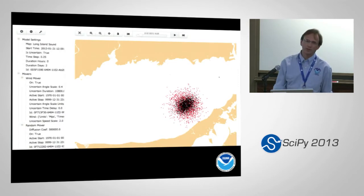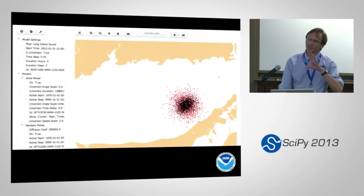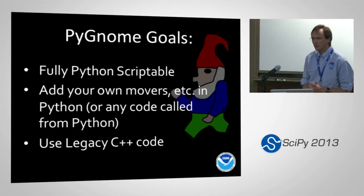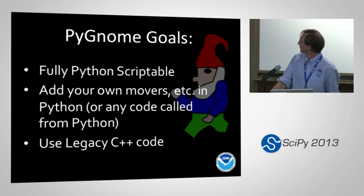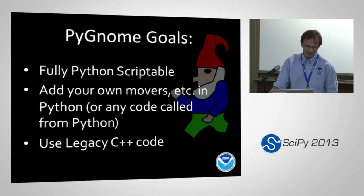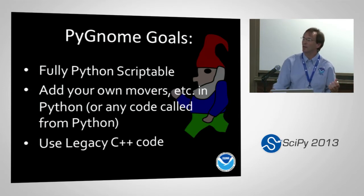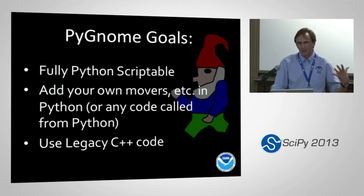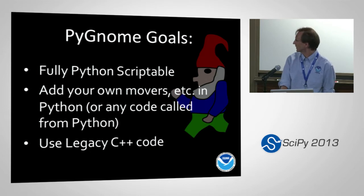This is a quick screenshot of the web interface in its current version. I don't have time to talk about the architecture of the web application, but it uses a lot of newer web development techniques. The real goal of PyGNOME — our new Python library for driving this model — is that it's fully Python scriptable. You can add your own pieces written in Python, or in Fortran, C, or anything callable from Python. And it was really important that we could make use of our legacy C++ code — we've been building that for 15 years; it's robust, it works, it does a lot of stuff. We didn't want to rewrite all that.